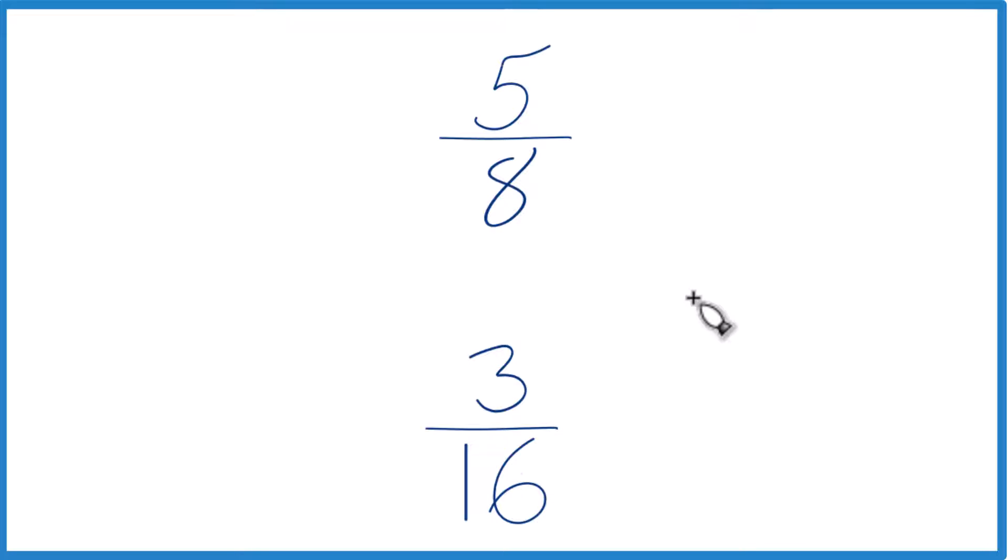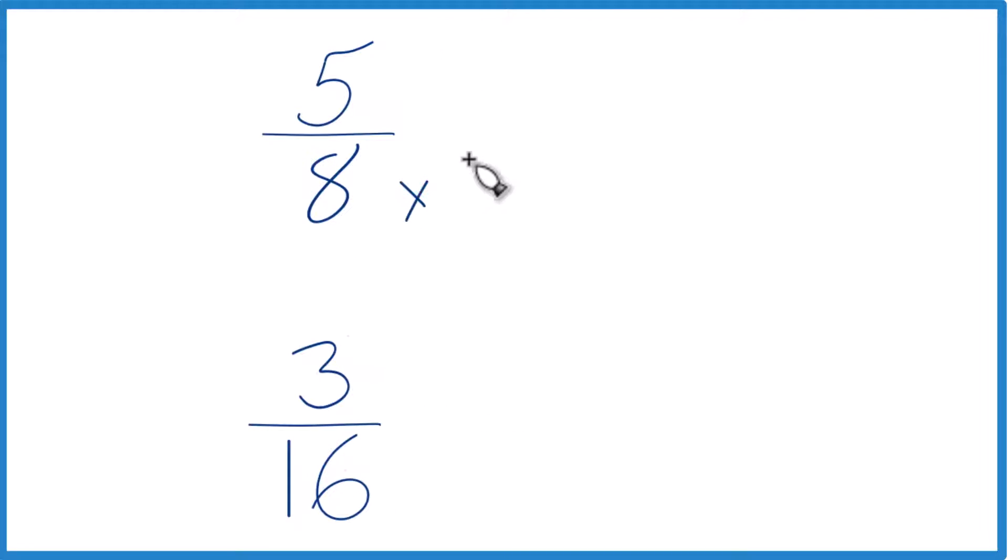The other way is we could find a common denominator. So I have 8 here. Let's just multiply that by 2, because 8 times 2 equals 16. Down here we have 16, so let's just keep this the same, 3 sixteenths.